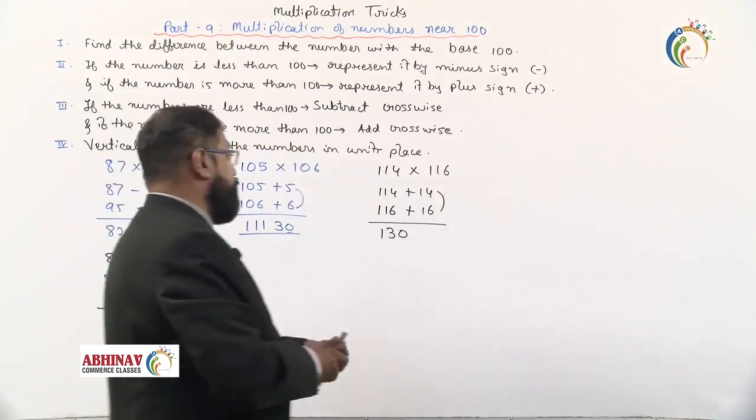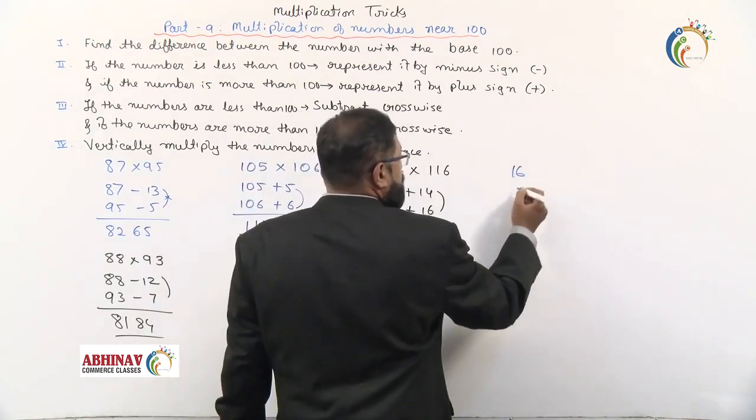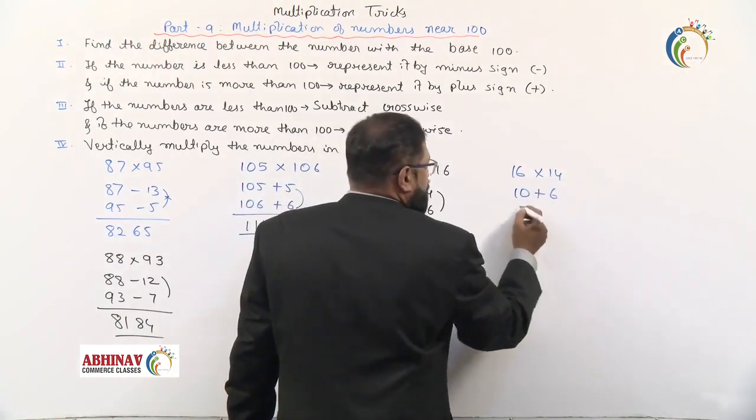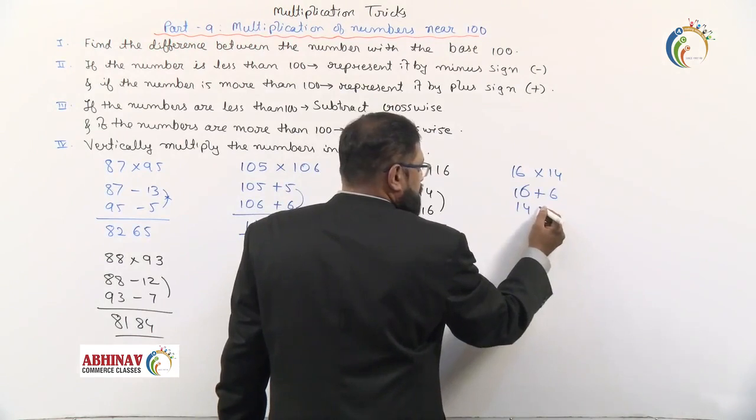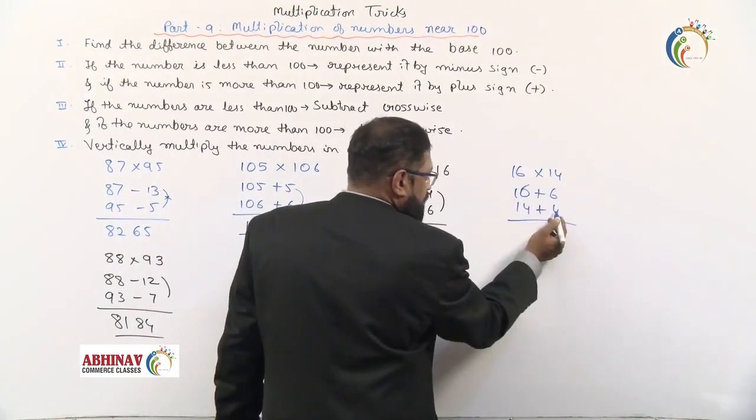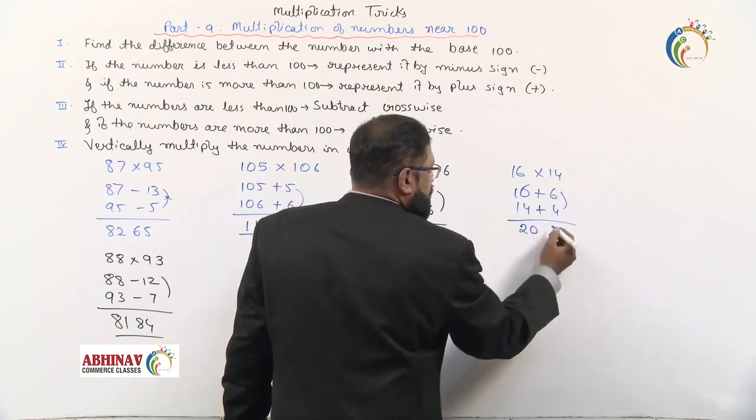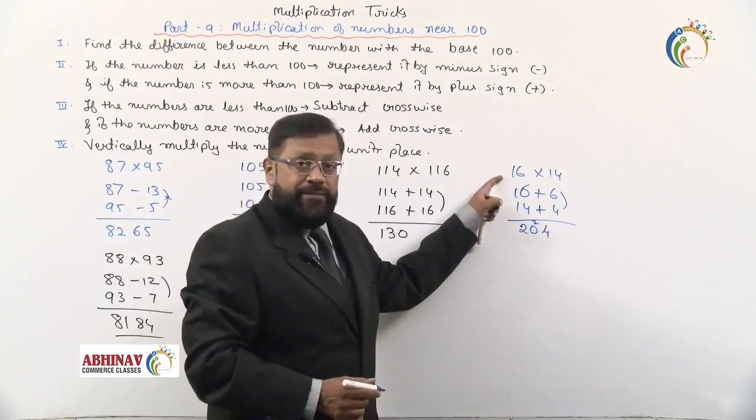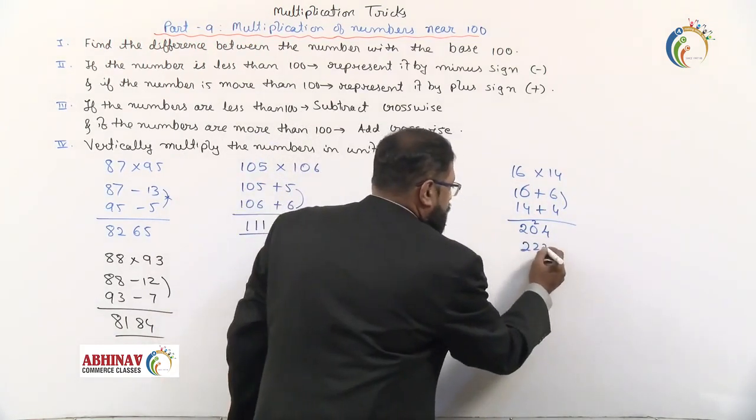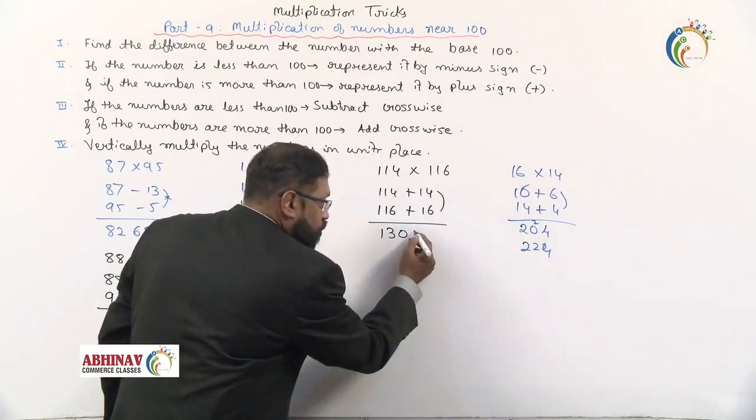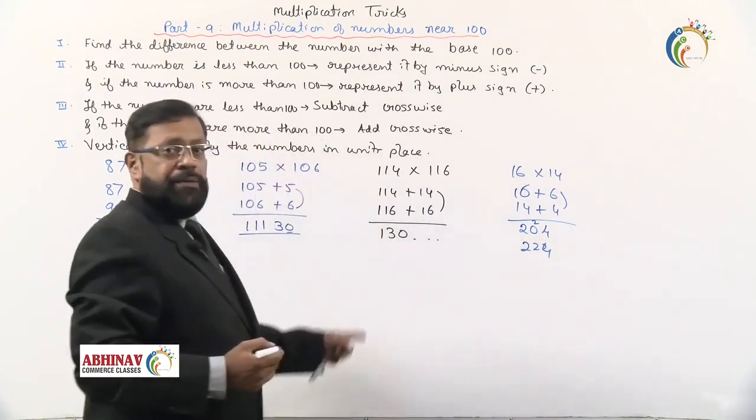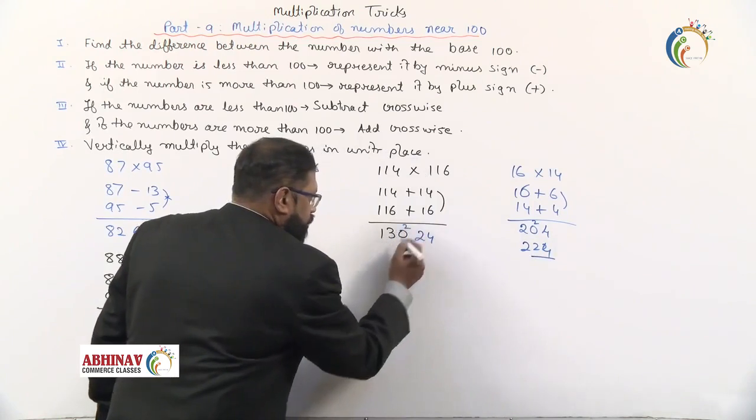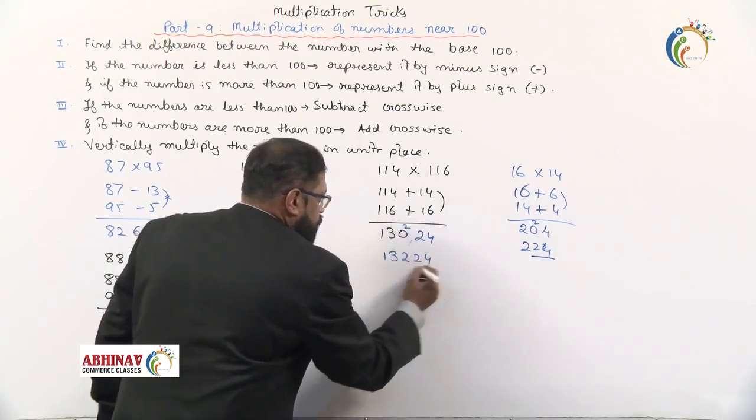For 16 times 14, you can use base 10. So 16 is 10 plus 6, and 14 is 10 plus 4. Cross add: 16 plus 4 or 14 plus 6 equals 20. Then 6 times 4 equals 24. Carry forward 2 because here the base is 10. We get 224. We can't write three digits because the base is 100, so we're allowed only the last two digits, 24, and carry forward 2. The answer is 13224.